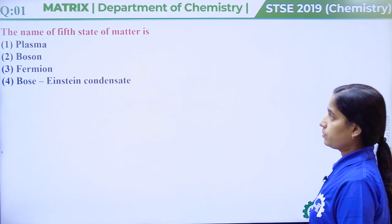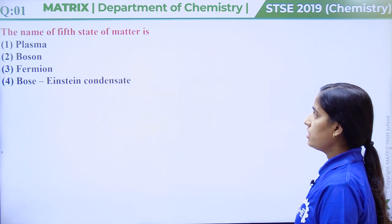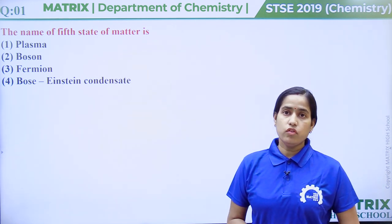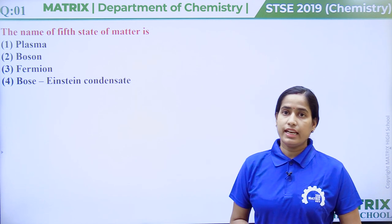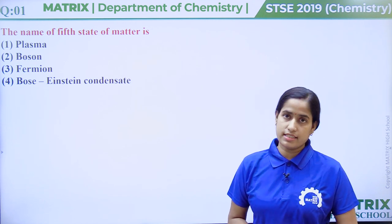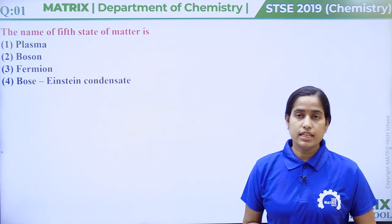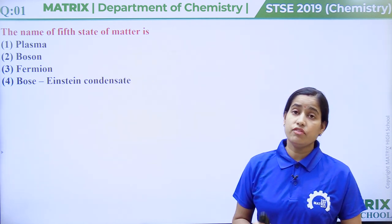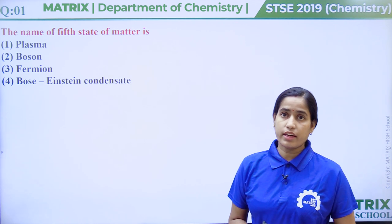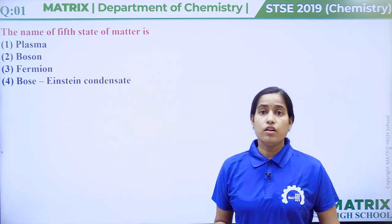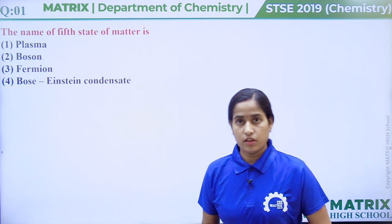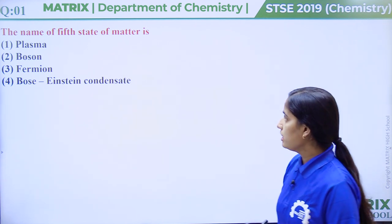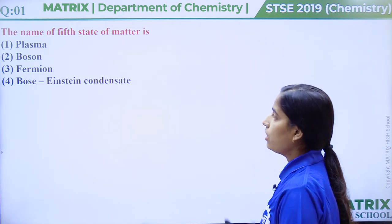Question number 1: The name of the 5th state of matter is. Basically, matter has 5 states: solid, liquid, gas, plasma, and BEC. The first state is solid, second is liquid, third is gas, fourth is plasma, and the fifth state is BEC, which is also called Bose-Einstein condensate. So the correct answer should be option number 4.